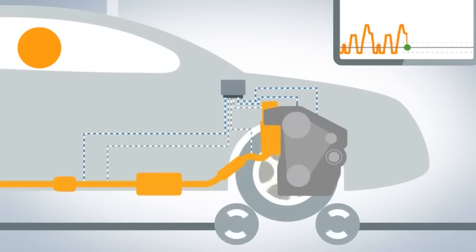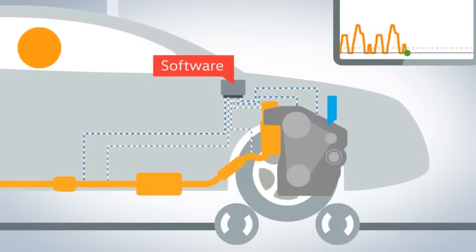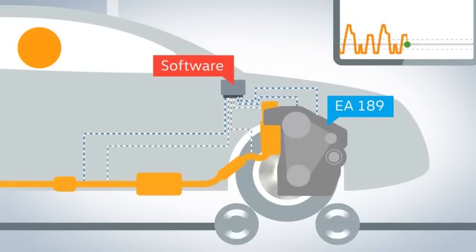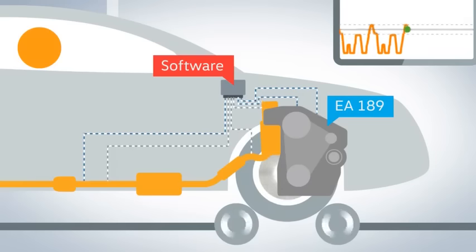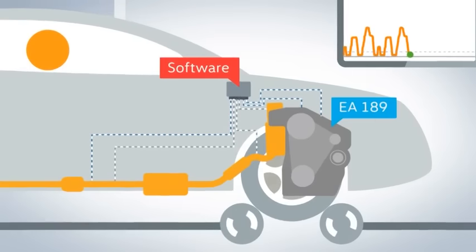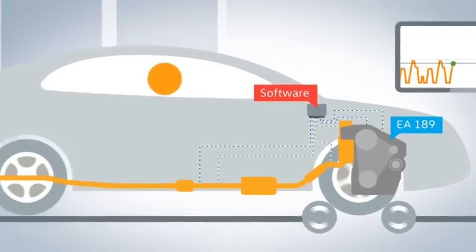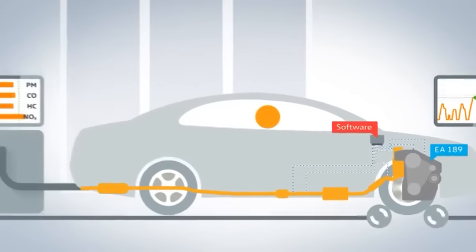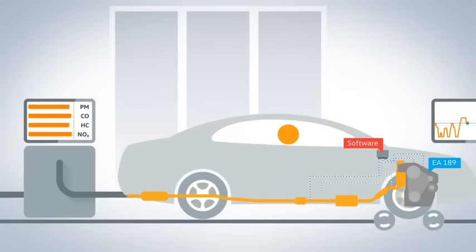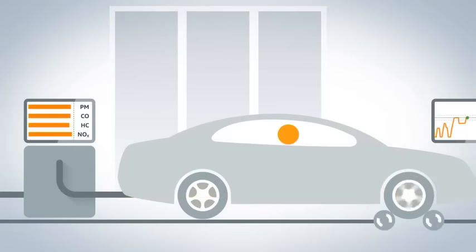Software installed in vehicles fitted with EA 189 diesel engines adjusts the emissions during dynamometer tests by changing the exhaust gas recirculation rate. This ensures that compliant emission levels are reached only during the test cycle. This mode is deactivated under normal operating conditions. The planned software update will no longer include this deactivation.